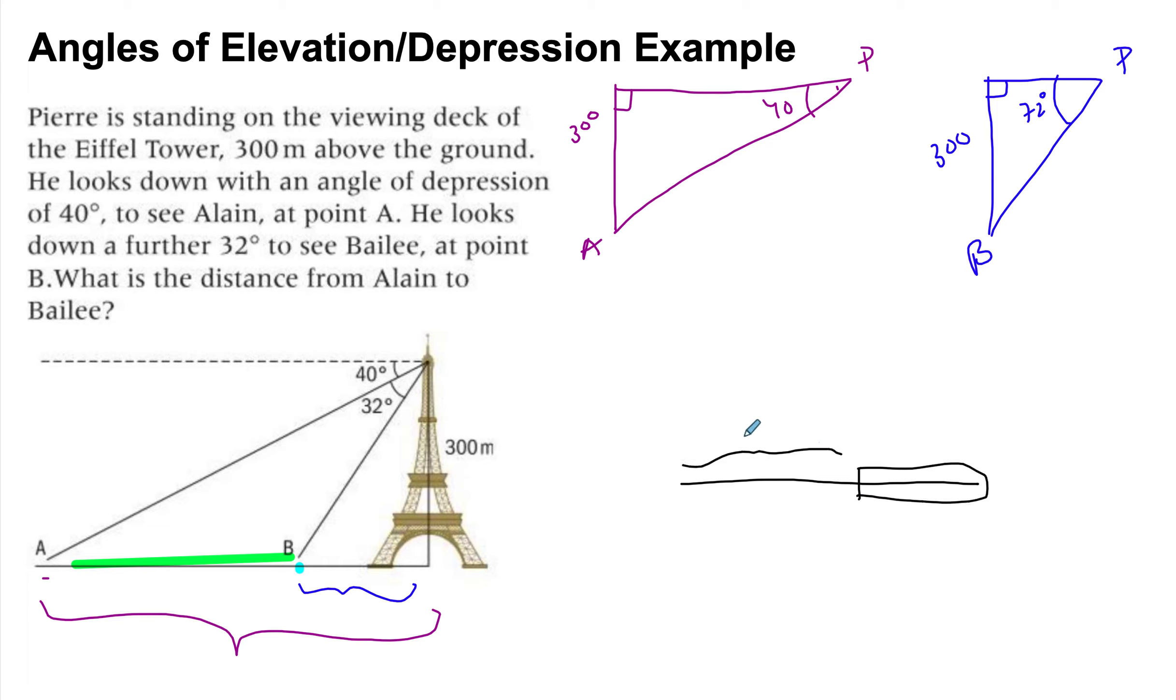then this is what you're left with. So we want the full length and then part of the length and then subtract them from each other. So what we need to find are these lengths at the top.